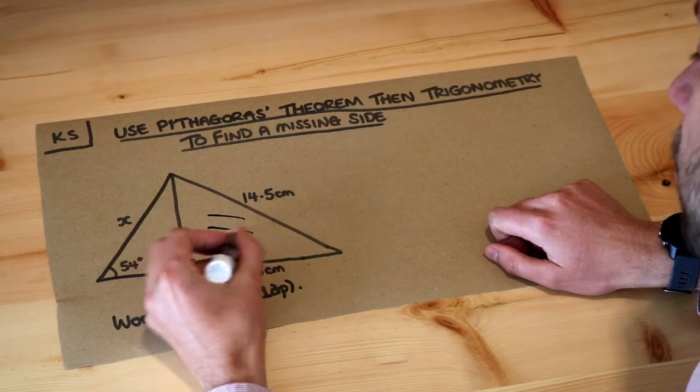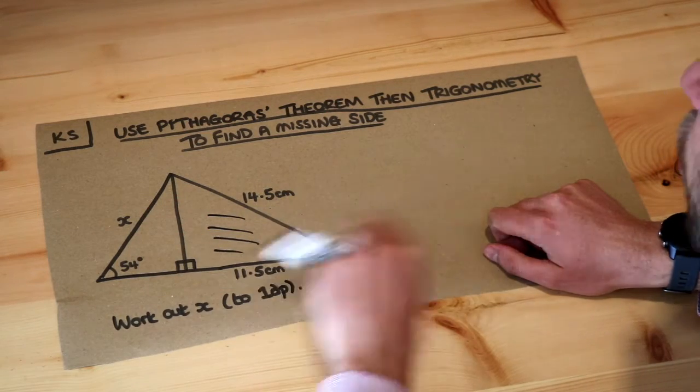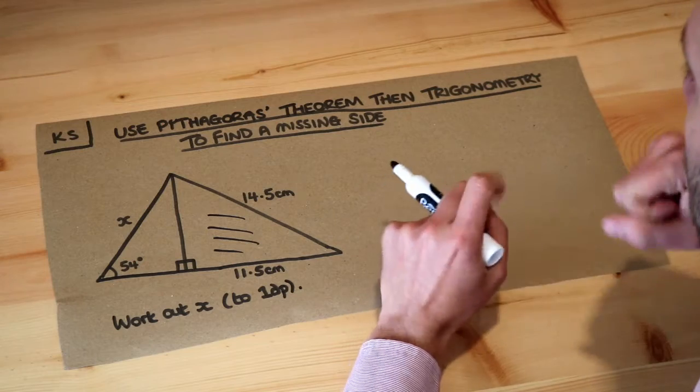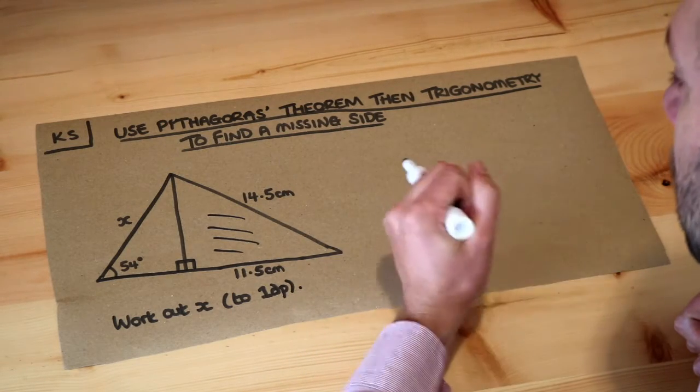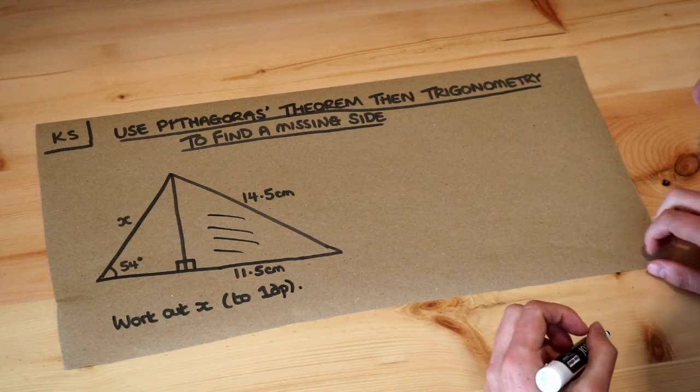However in this right triangle over here we've got two of the sides. Now if we know two of the sides of a right triangle and we want to find out the third, what do we use? Well we use Pythagoras' theorem don't we?